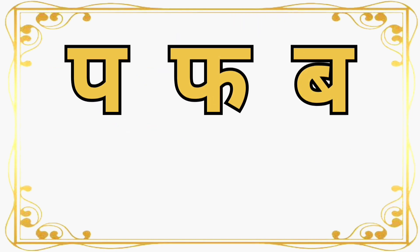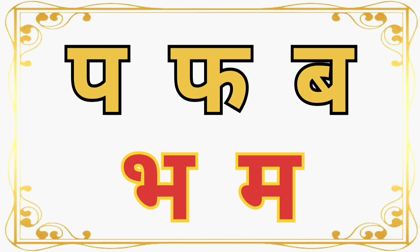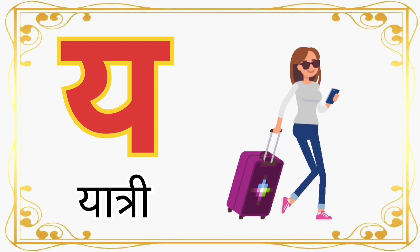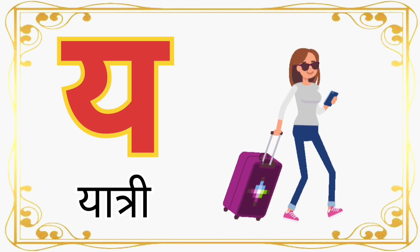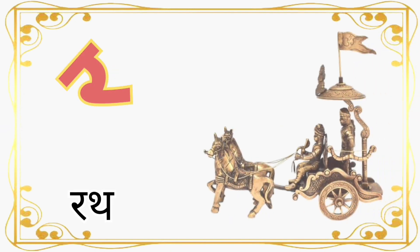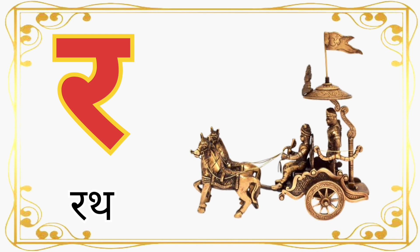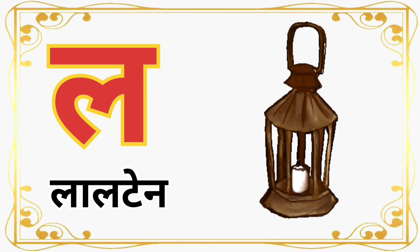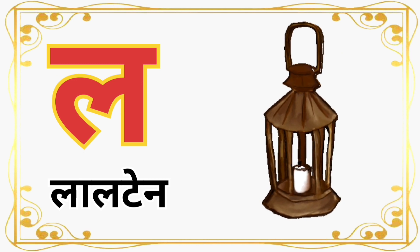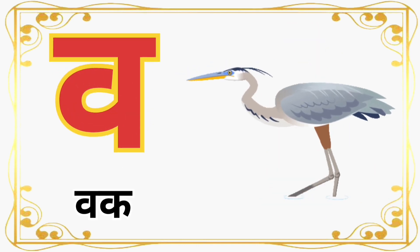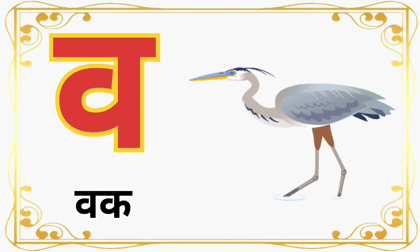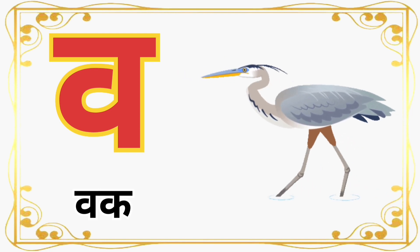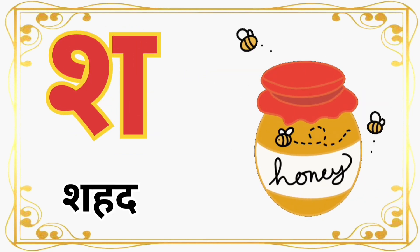आओ दुबारा पढ़ें: पा, फा, बा, भा, म। य से यात्री (Ya for traveller). र से रथ (Ra for chariot). ल से लालटेन (La for lantern). व से वक (Va for heron). श से शहद (Sha for honey).